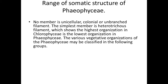The various thallus organization of Phaeophyceae may be classified in the following groups. The first type is like Ectocarpus, where the thallus is profusely branched and the cells are joined end to end in a single series. The thallus consists of a prostrate branched portion from which the erect branch system arises. Such type of heterotrichous organization we can see in Ectocarpus.